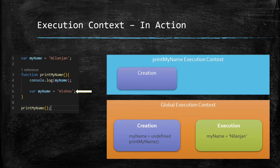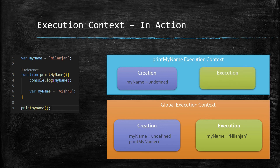In the creation phase of the function's execution context, it looks for variables inside it and assigns 'undefined' to them. As soon as the JavaScript engine finds a 'myName' variable on line six within this function, it allocates memory and assigns 'undefined' as its value.